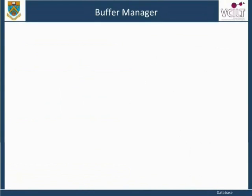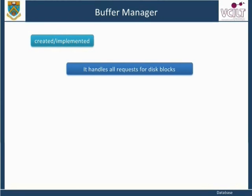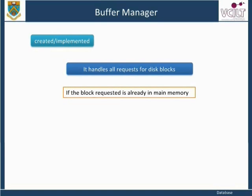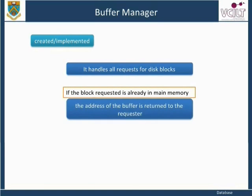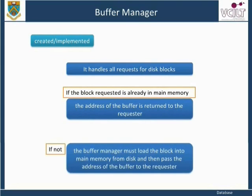A buffer manager is implemented as a subsystem responsible for the allocation of buffer space. It handles all requests for disk blocks. If the block requested is already in main memory, the address of the buffer is returned to the requester. If not, the buffer manager must load the block into main memory from disk and then pass the address of the buffer to the requester.